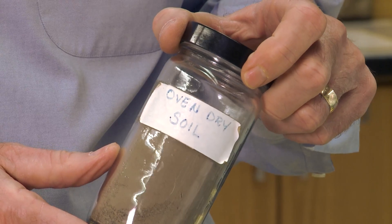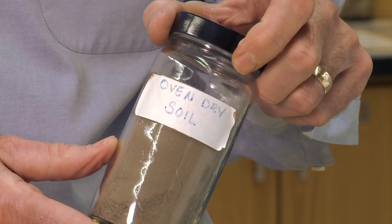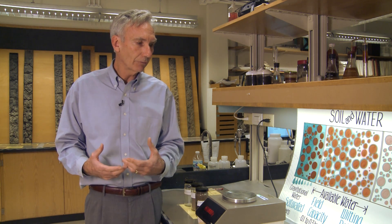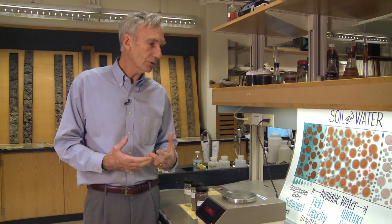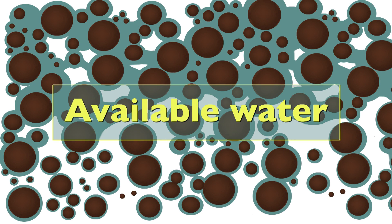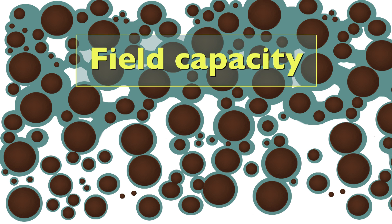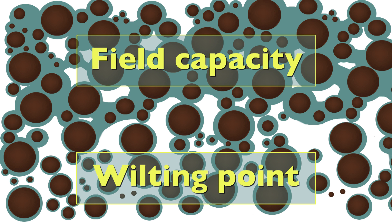The other calculation is the oven dry weight, where we stick the soil in the oven and dry it at 105 degrees for 24 hours — that's the oven dry weight. What we are most concerned about is something called available water: the amount of water available between field capacity and wilting point. That is called plant-available water.